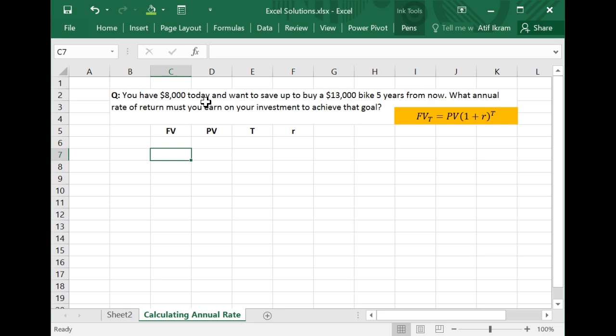Let's suppose that you have $8,000 today. If I'm figuring out the different inputs that are given to me in the context of this formula, then the present value is given to me because that is $8,000. This is how much I have in the present, this today. I'm looking to save up to buy a $13,000 bike five years from now. So I'm going five years out into the future. And what I'm interested in is that this $8,000 become $13,000 five years out into the future. So $13,000 would be my future value. And the question that is being posed is what annual rate of return must you earn on your investment to achieve this goal?